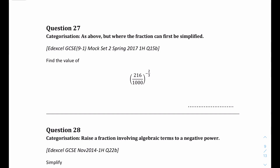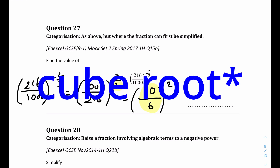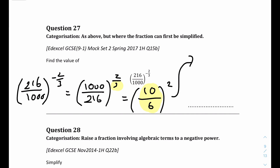Question 27: a similar question with 216 over 1000, to the power of negative 2 over 3. We get rid of the negative by reciprocating to get 1000 over 216, to the power of 2 over 3. We take the cube root first: the cube root of 1000 is 10, and the cube root of 216 is 6. That gives 10 over 6, squared, which equals 100 over 36. Simplifying by dividing both by 4 gives 25 over 9. The final answer is 25 over 9.